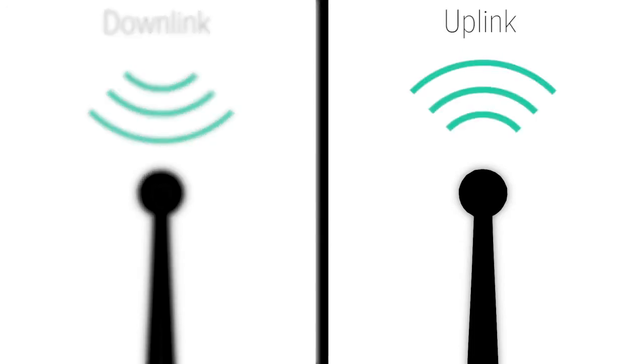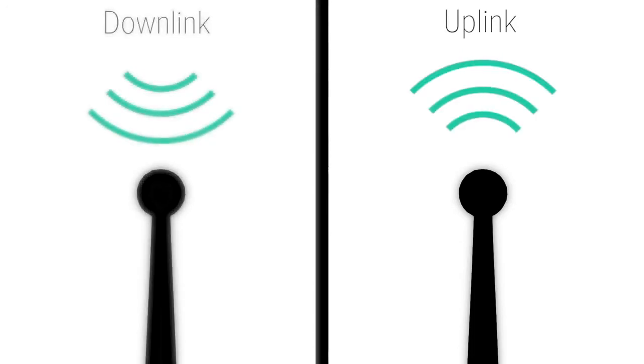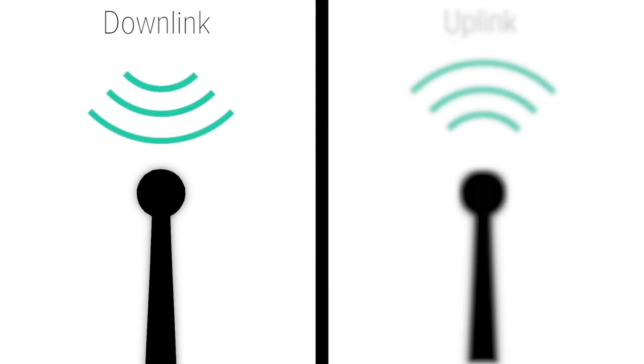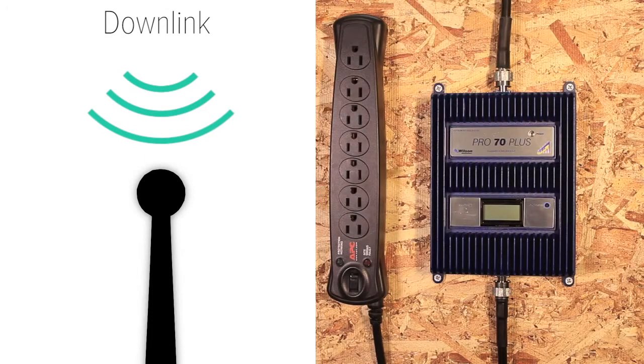Uplink is the signal going to the tower. Downlink is the signal coming from the tower. Increasing downlink is the main objective of the amplifier.